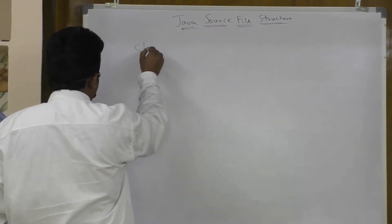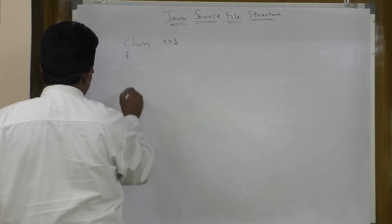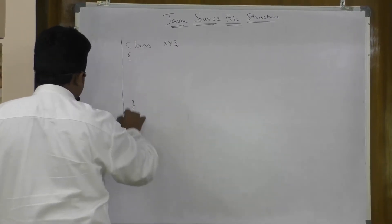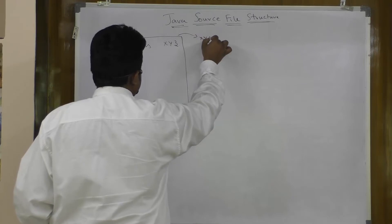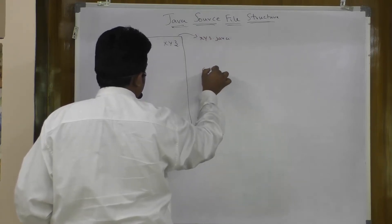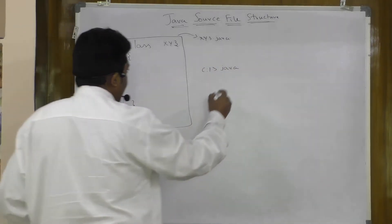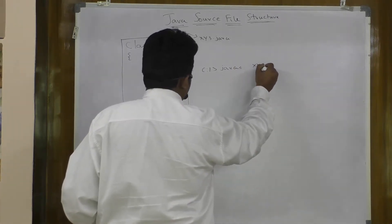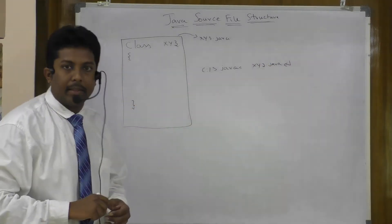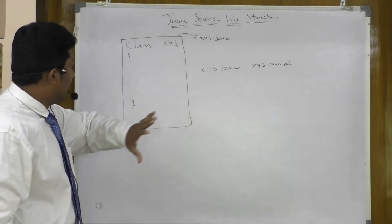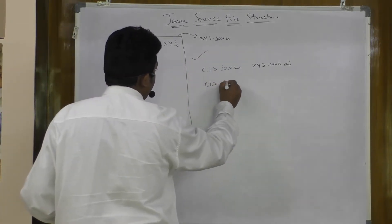First and foremost, if I am writing a small Java program like 'class XYZ' and I have named this source file as XYZ.java, then in the command line if I compile this Java program, many people think it won't compile because it doesn't have a main method. But that is not the case — it compiles 100% and no error will be reported.